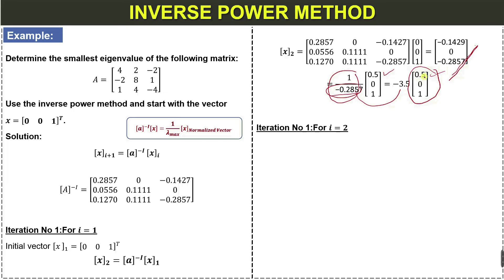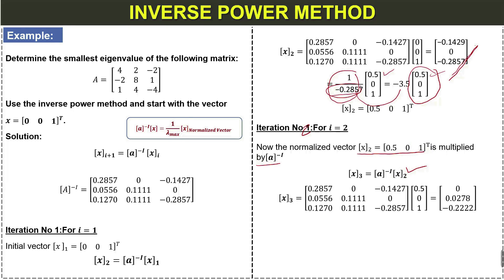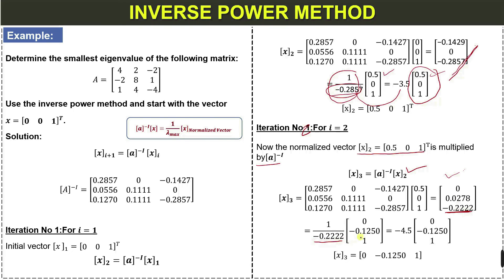For iteration 2 (i = 2), the normalized vector x_2 is multiplied by the inverse matrix. After substituting all values and multiplying, we again identify the maximum absolute value in the resulting vector. We write 1 divided by this value, divide the vector by it to normalize, and obtain a new normalized vector. This gives lambda_2 = -4.5 and a new normalized vector x_3.